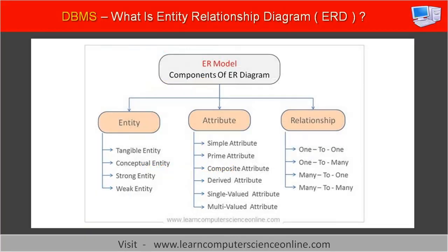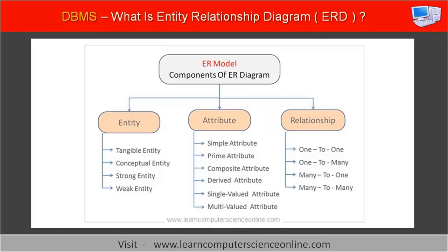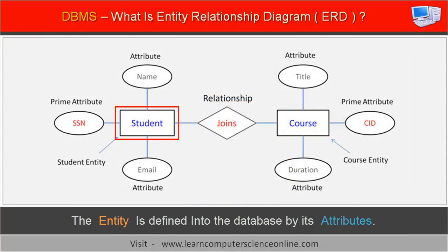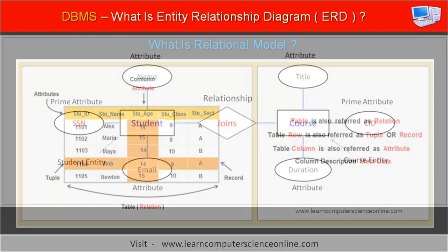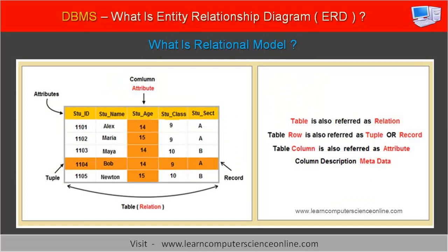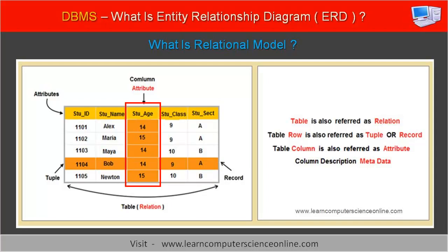Let us now move on to discuss the second component of the ER diagram — the concept of an attribute. In the DBMS world, the database entity is represented in the database in terms of its attributes. An entity's attributes are used to describe the various properties of an entity. An entity can have a single or many attributes that can be recorded into the database. In RDBMS, a table represents an entity and the table columns represent the attributes.